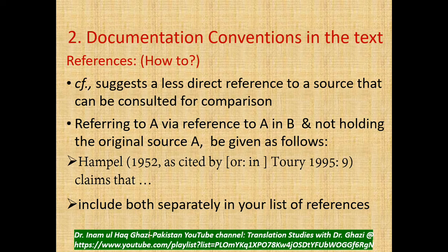If referring to source A via reference in source B, where the original source is unavailable but quoted in B, the format should be: 'Hempel (1952, as cited by Toury 1995: 9) claims that...' Both sources should be included separately in your list of references at the end of your article or thesis.